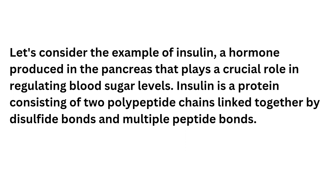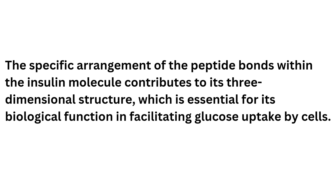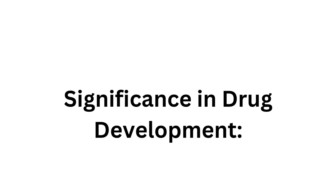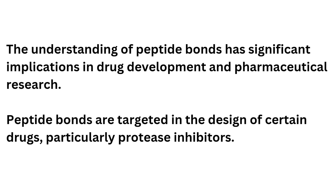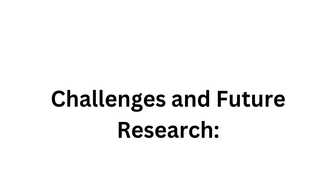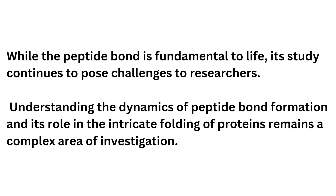Understanding the peptide bond: A peptide bond is a covalent chemical bond that forms between the carboxyl group of one amino acid and the amino group of another amino acid. This process occurs during protein synthesis when amino acids are linked together in a specific sequence to form a polypeptide chain. The reaction that leads to the formation of a peptide bond is a condensation reaction, where a molecule of water is eliminated as the bond is formed between the amino acids.